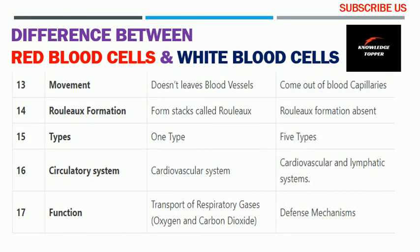The sixteenth basis is the circulatory system — red blood cells are part of the cardiovascular system, while white blood cells are involved in both the cardiovascular and lymphatic systems. The seventeenth and final basis is function — the main function of red blood cells is transport of respiratory gases, oxygen and carbon dioxide, while the main function of white blood cells is defense mechanisms.